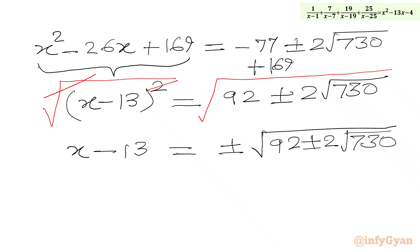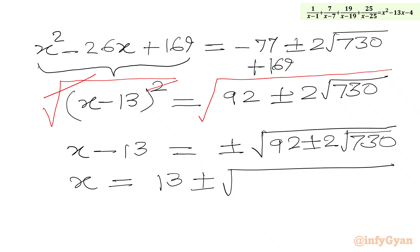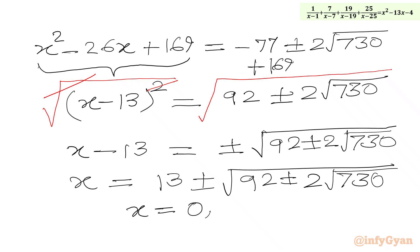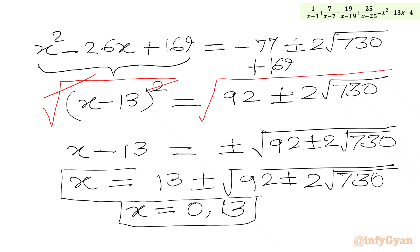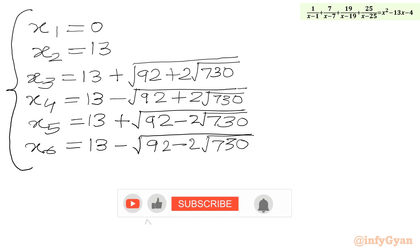Adding 13 to both sides gives x equal to 13 plus or minus square root of (92 plus or minus 2 square root of 730). This produces 4 additional solutions. Combined with the earlier solutions x equal to 0 and x equal to 13, we have 6 solutions in total: x1, x2, x3, x4, x5, x6. These are all 6 possible real solutions of the rational equation.